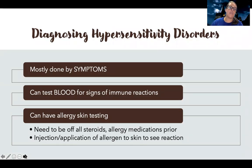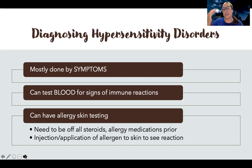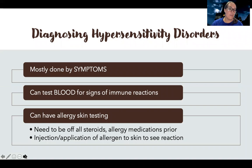Most diagnosing of hypersensitivity disorders is done by symptoms. Someone comes in and says, 'My mouth is swelling,' or 'I have this rash,' or something else is going on. But we can also test blood for signs of immune reactions — we can get a CBC and look for certain cells that show the immune system is overreacting. The most common test people have is what's called allergy skin testing.